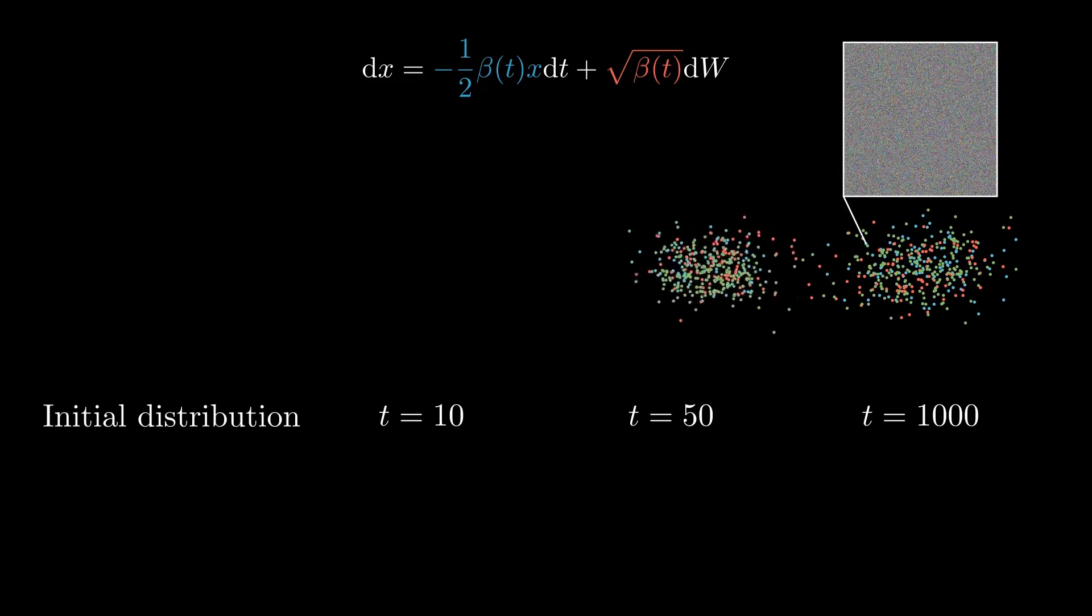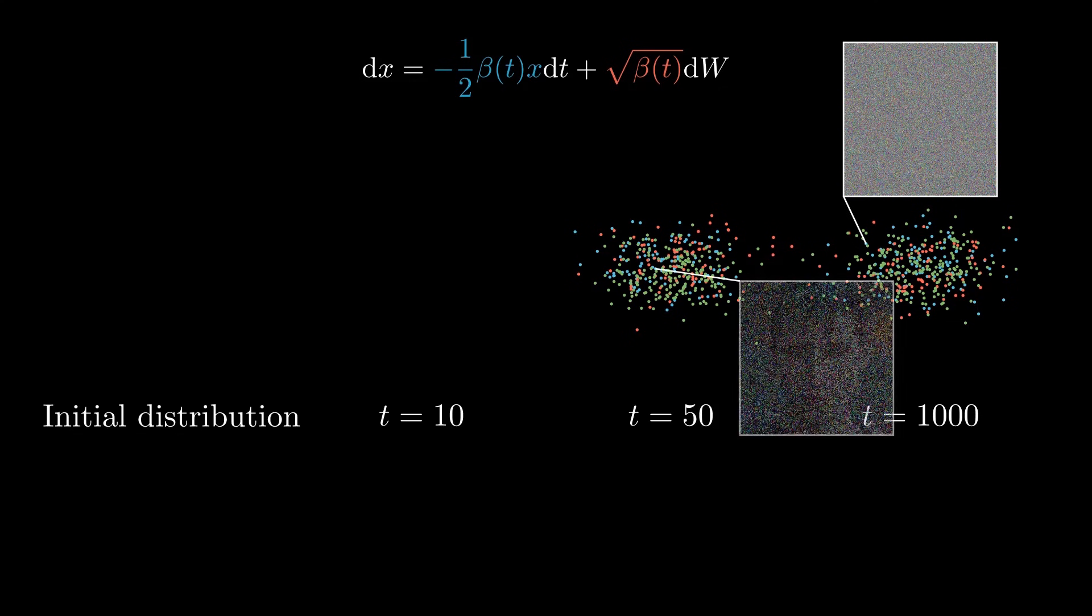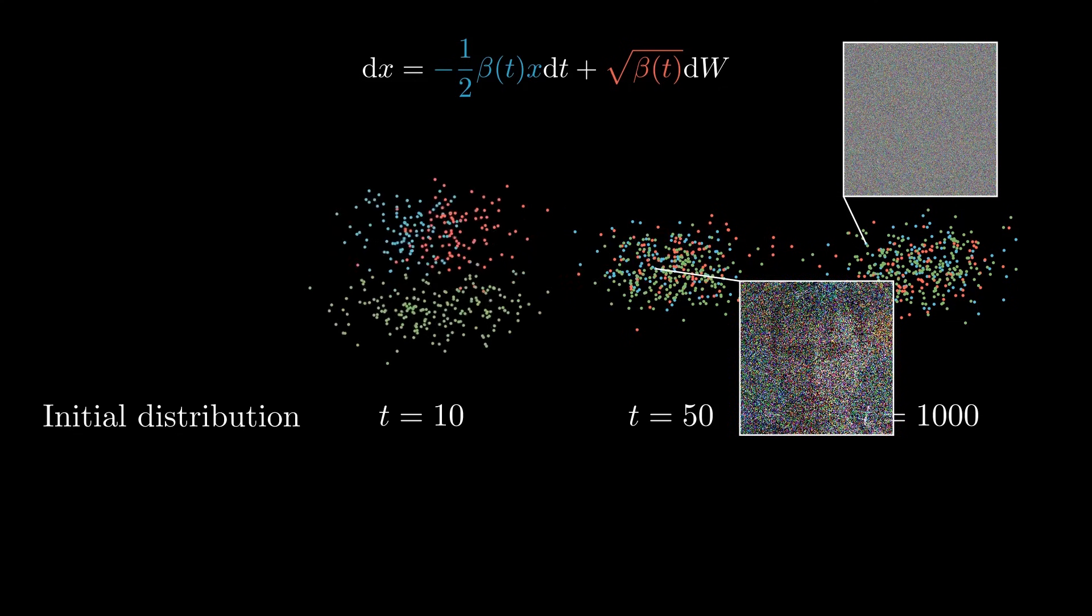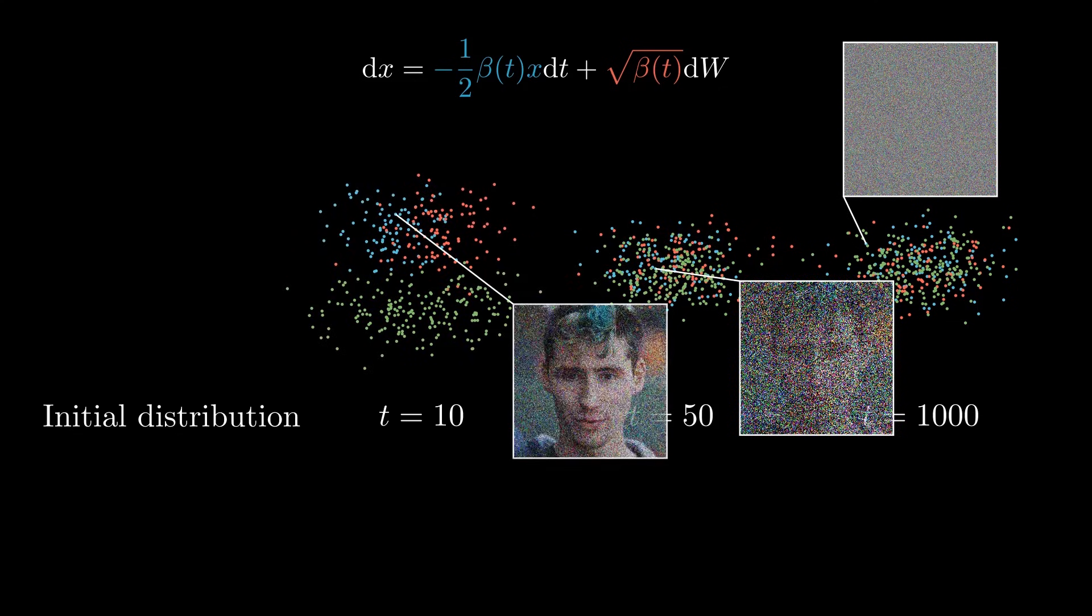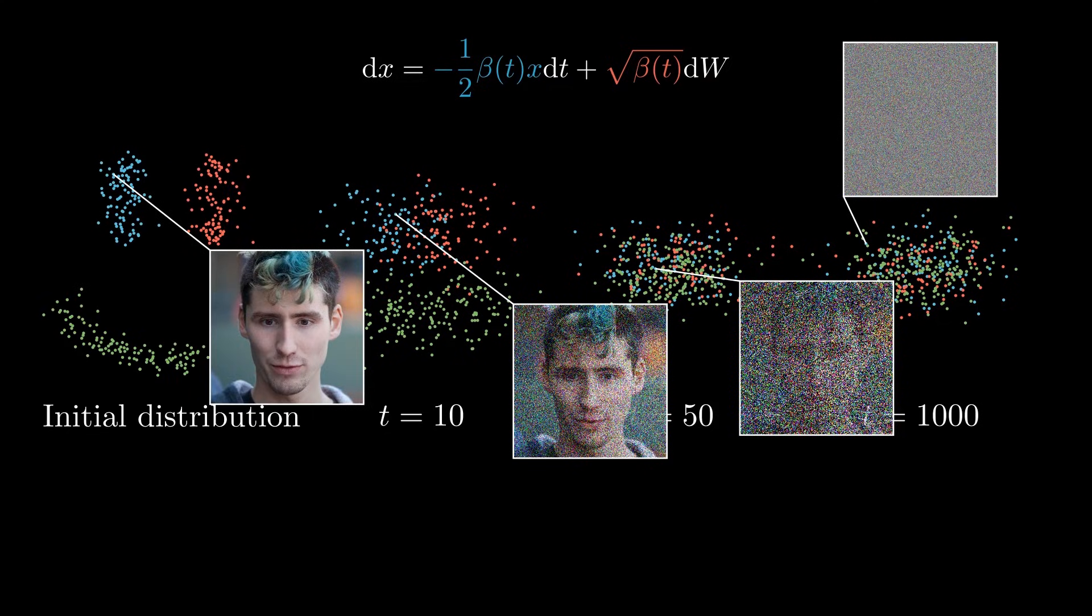If we are able to reverse this equation, we can start from random noise and slowly move backward to the original distribution, the one containing our clean images. This means by reversing the SDE, we can generate brand new images starting from a Gaussian distribution. But can we even reverse this particular SDE?